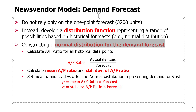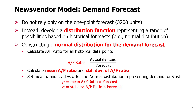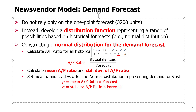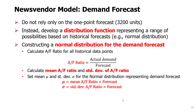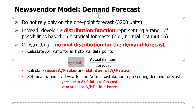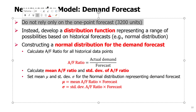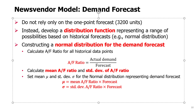So how do we construct a normal distribution for the demand forecast? We calculate something called the AF ratio — AF ratio is actual over forecasted demand. We divide actual demand by the forecasted demand using as many historical data points as we can collect. Once we calculate this, we can calculate the mean and standard deviation of this AF ratio. If we assume the distribution is normal, we can build a normal distribution for the new forecast by taking the mean AF ratio and multiplying it by the forecasted amount.